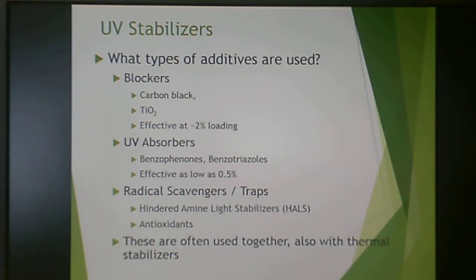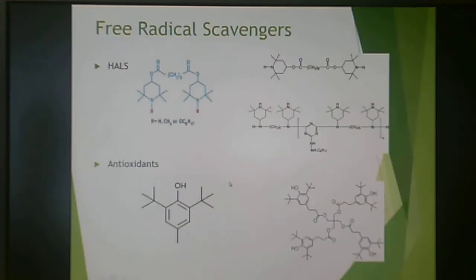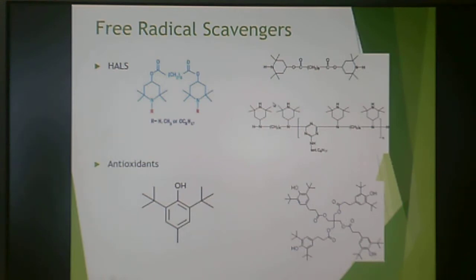Some of these additives can be quite expensive, especially HALS. This is a benzophenone in terms of its structure; this is a benzotriazole — this is the azole right here. These are some commercial examples of benzotriazoles. This is a HALS — a hindered amine light stabilizer. It's hindered because it has a big bulky group attached to the amine, blocking it sterically so other molecules can't get to it. This is a typical antioxidant structure; this is a dendritic antioxidant with groups sticking off it — it kind of looks like a little tree.